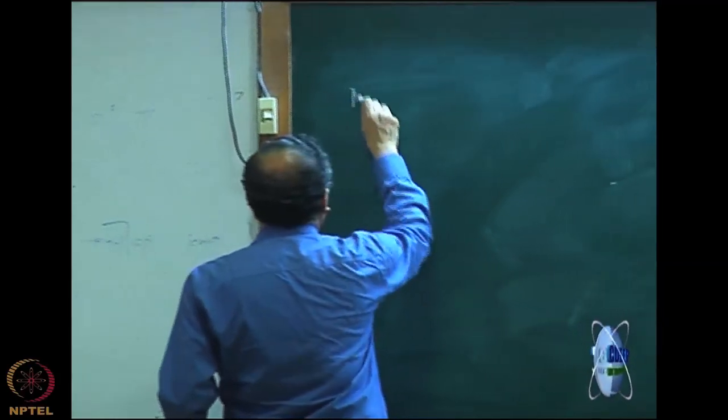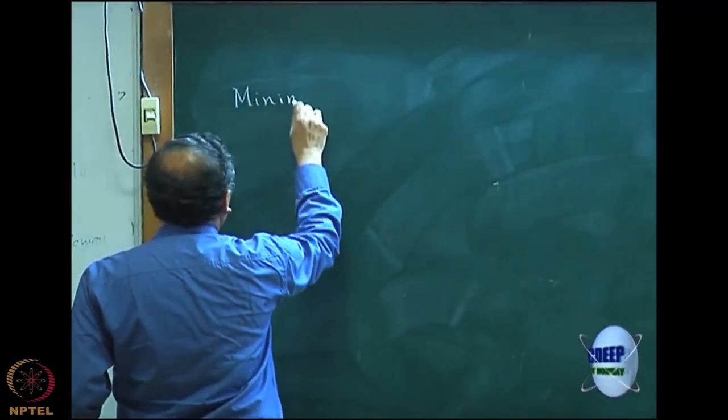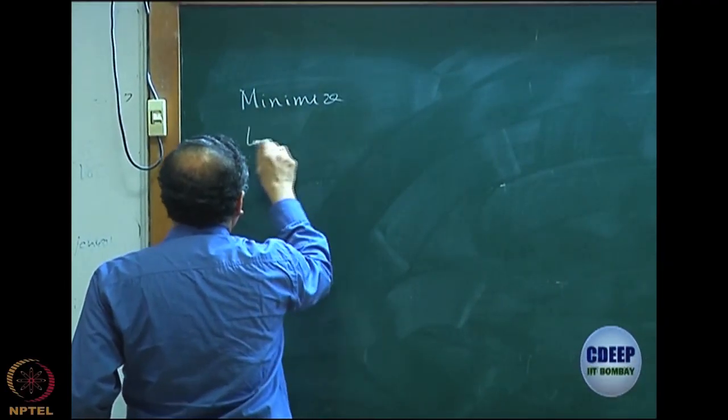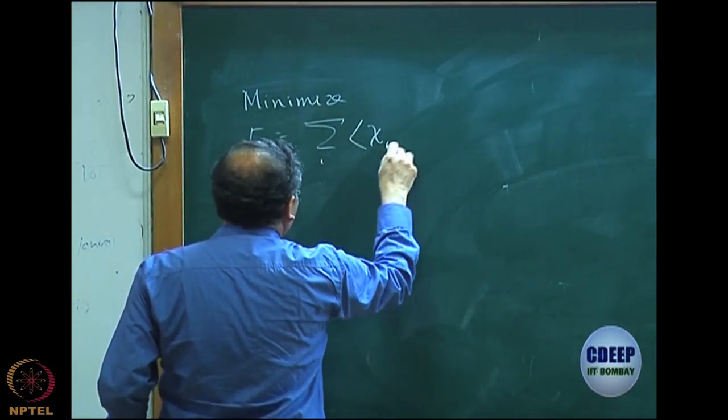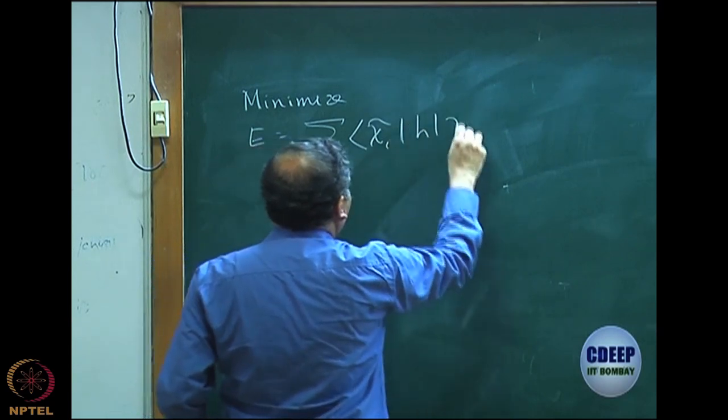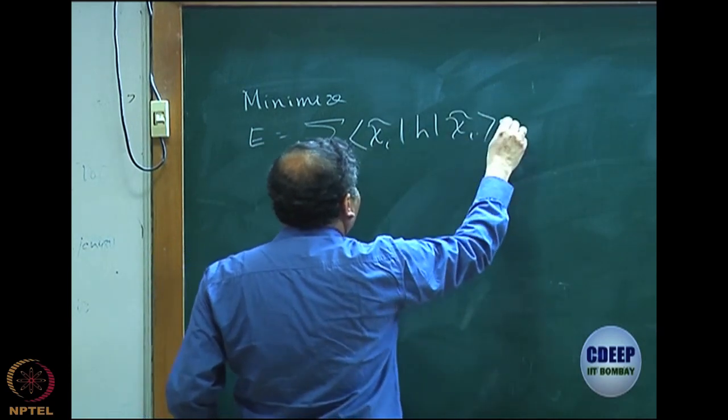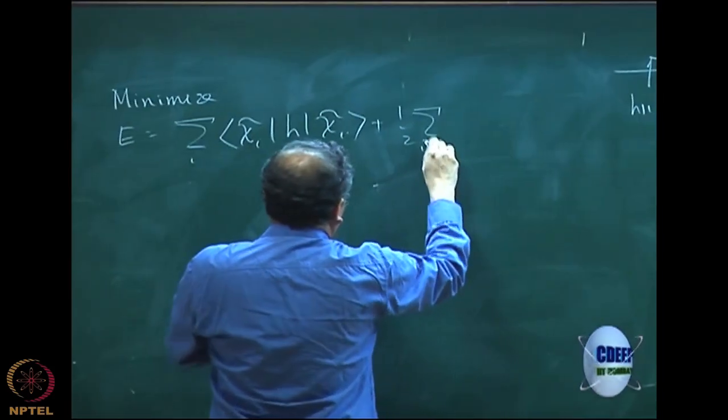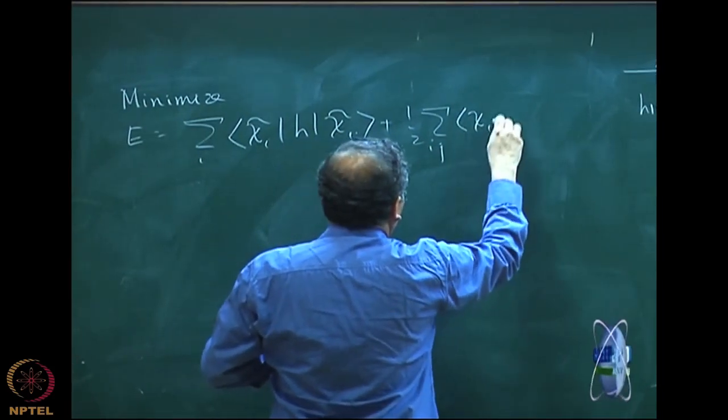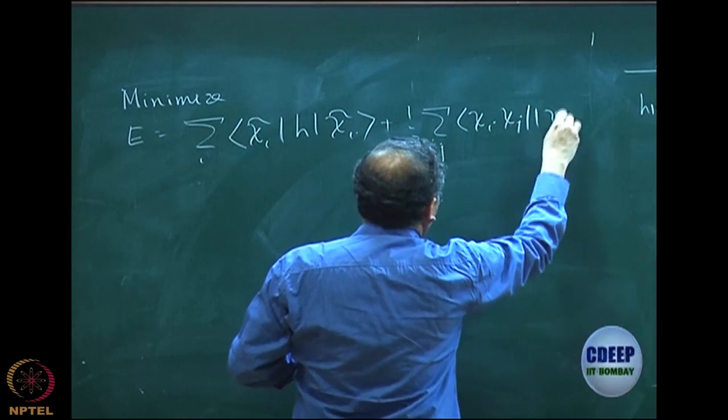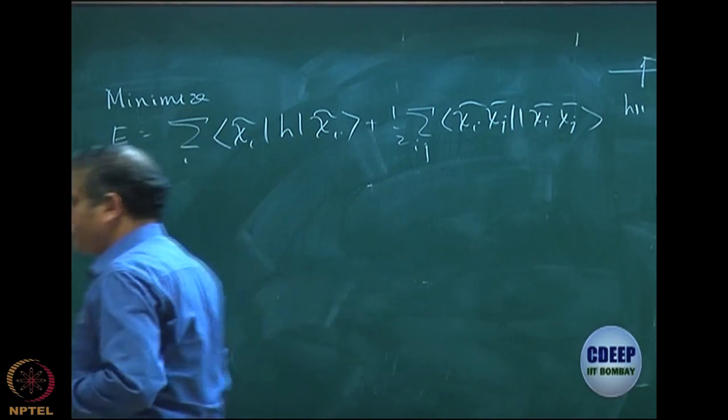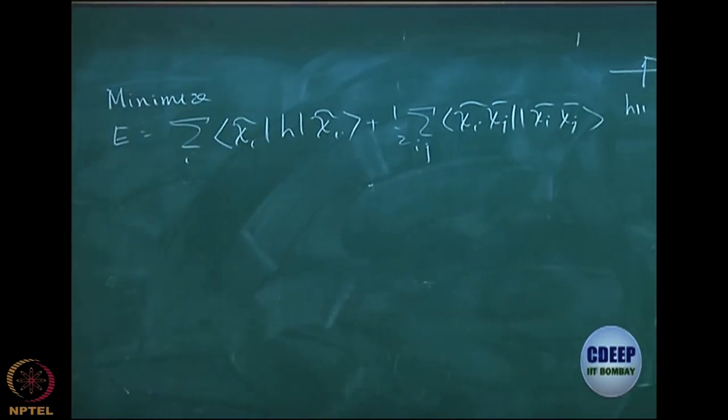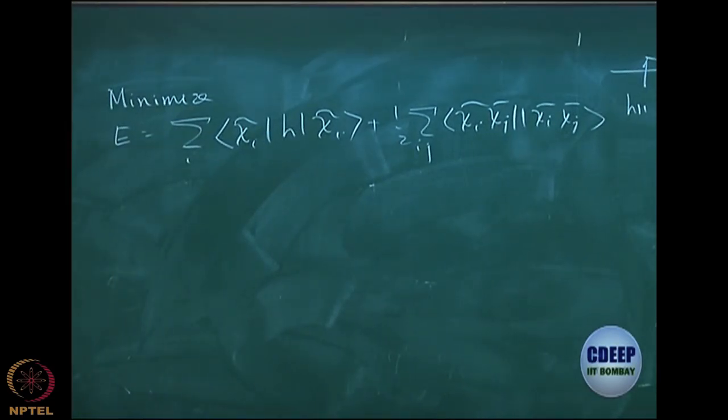I write again, I write the problem, minimize energy. Now, I write minimize E equal to, what is E? I now write it, chi i tilde. I write deliberately chi i tilde now because they are trial functions plus half of ij chi i chi j anti-symmetrized chi i. I have written in a short form now, anti-symmetrized matrix elements of the coulomb and exchange are stuck together.